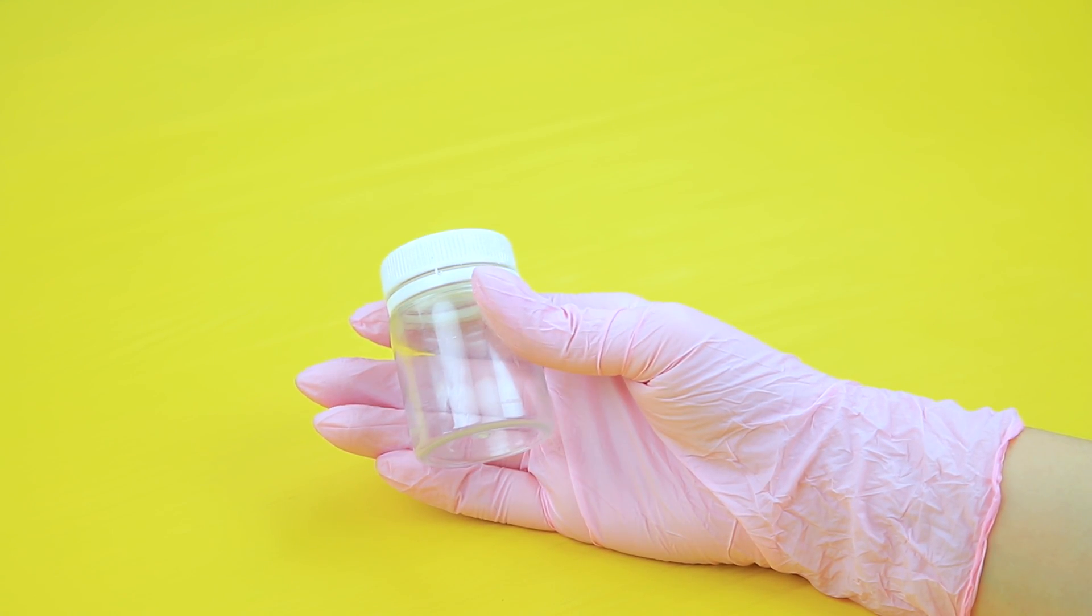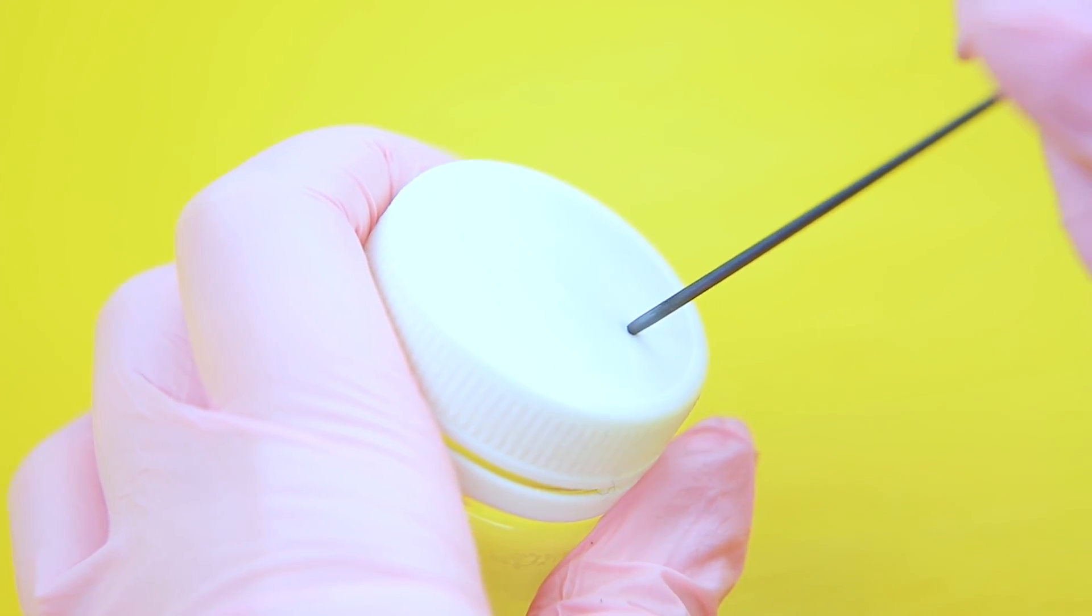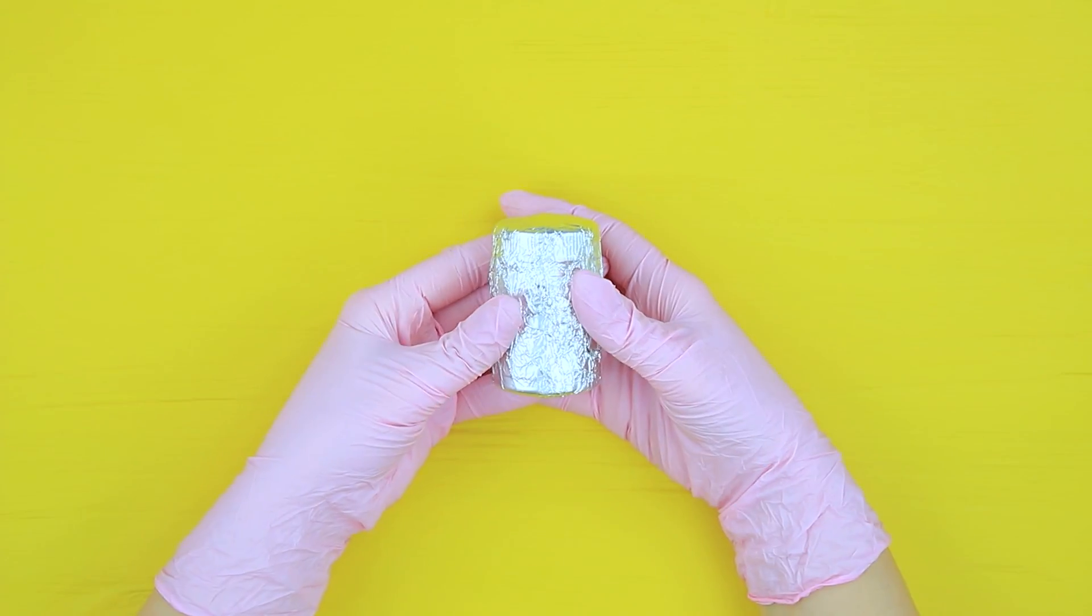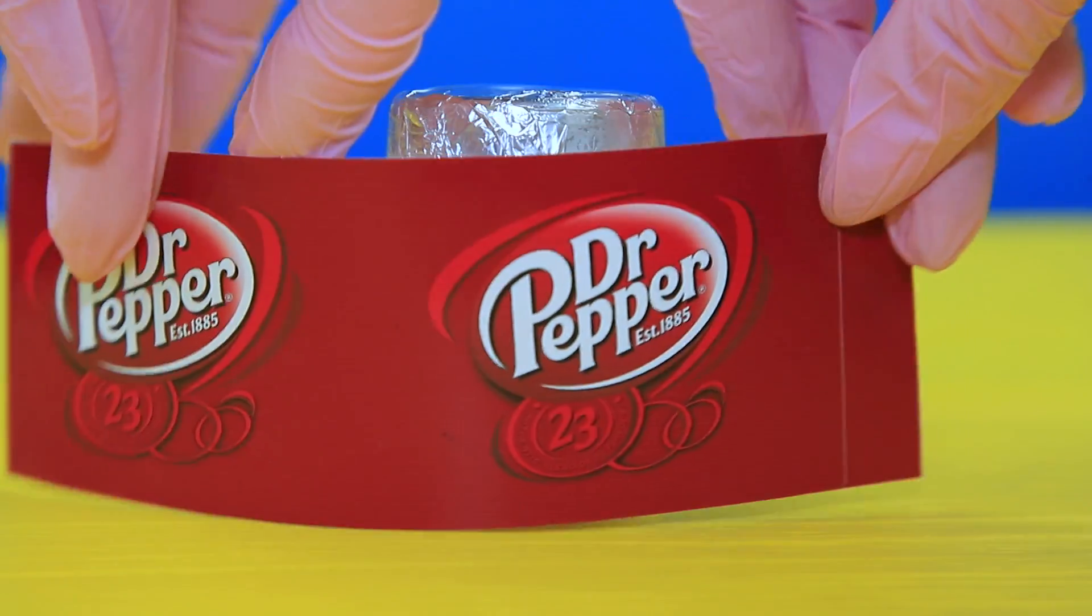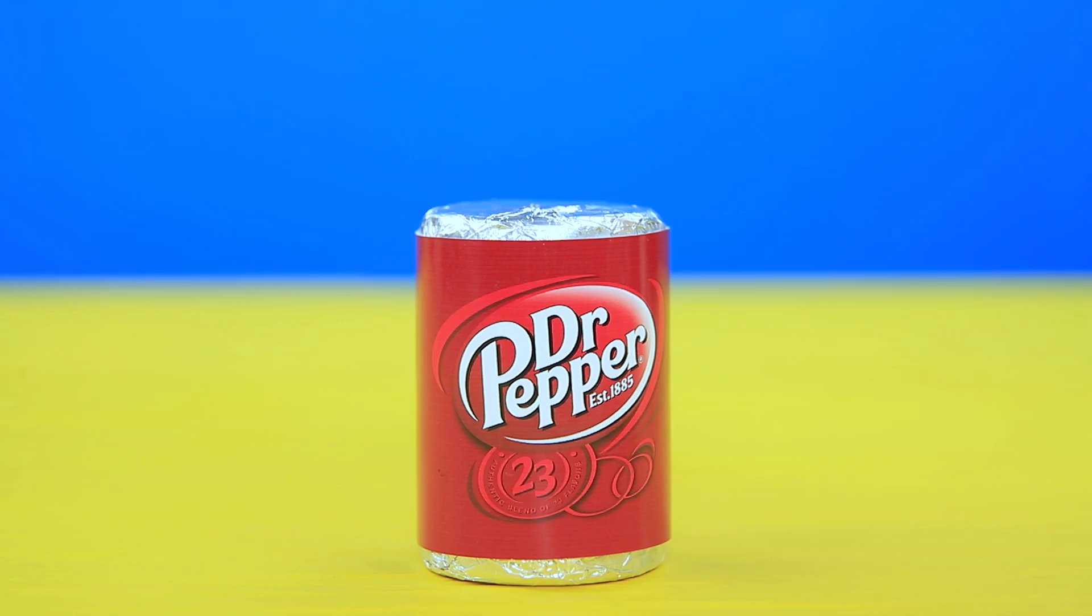Take a jar with a lid. Poke a hole in the lid with a heated awl. Wrap the jar in foil. Attach a printed Dr. Pepper label. Pour in the drink and stick in a short straw.